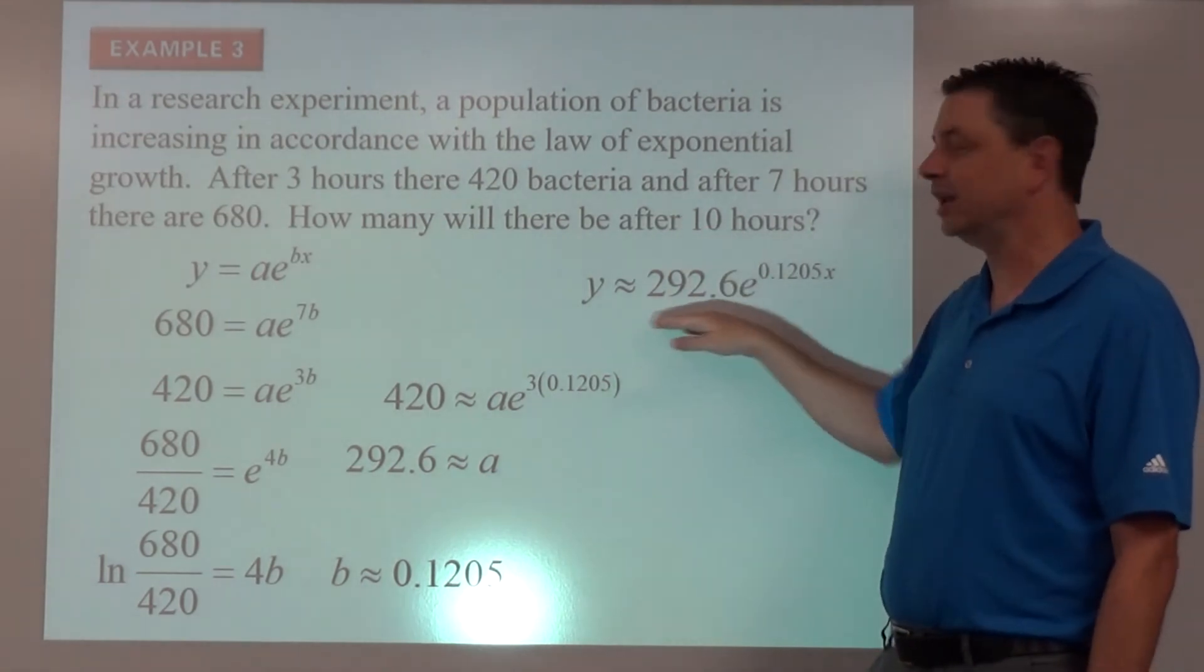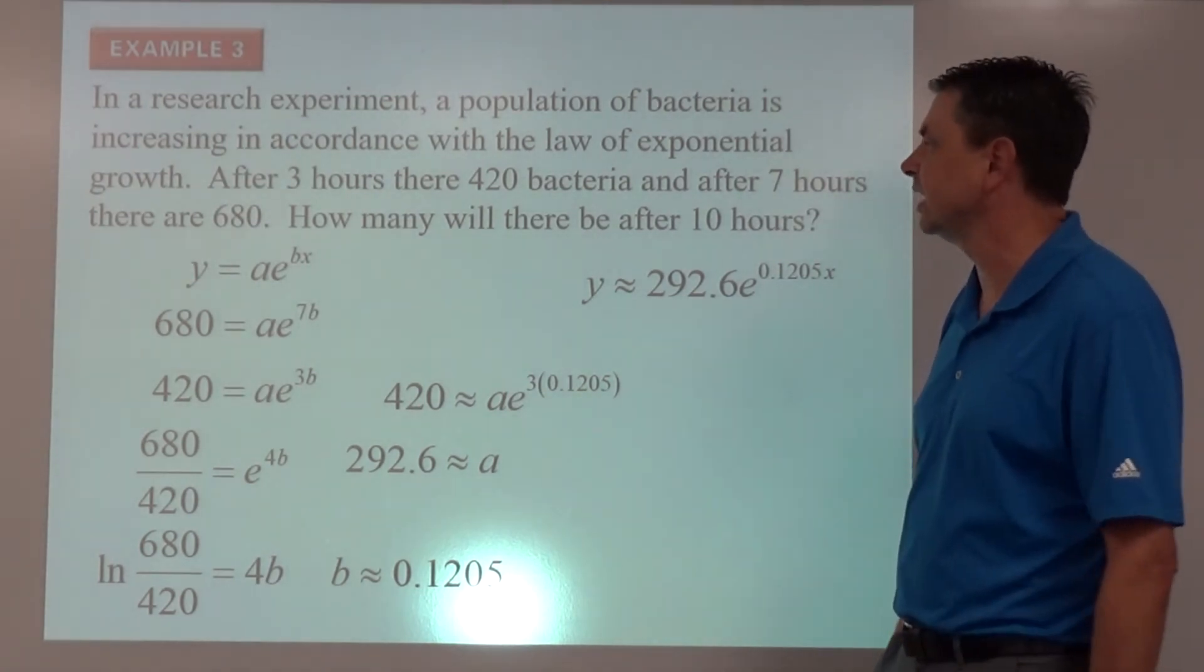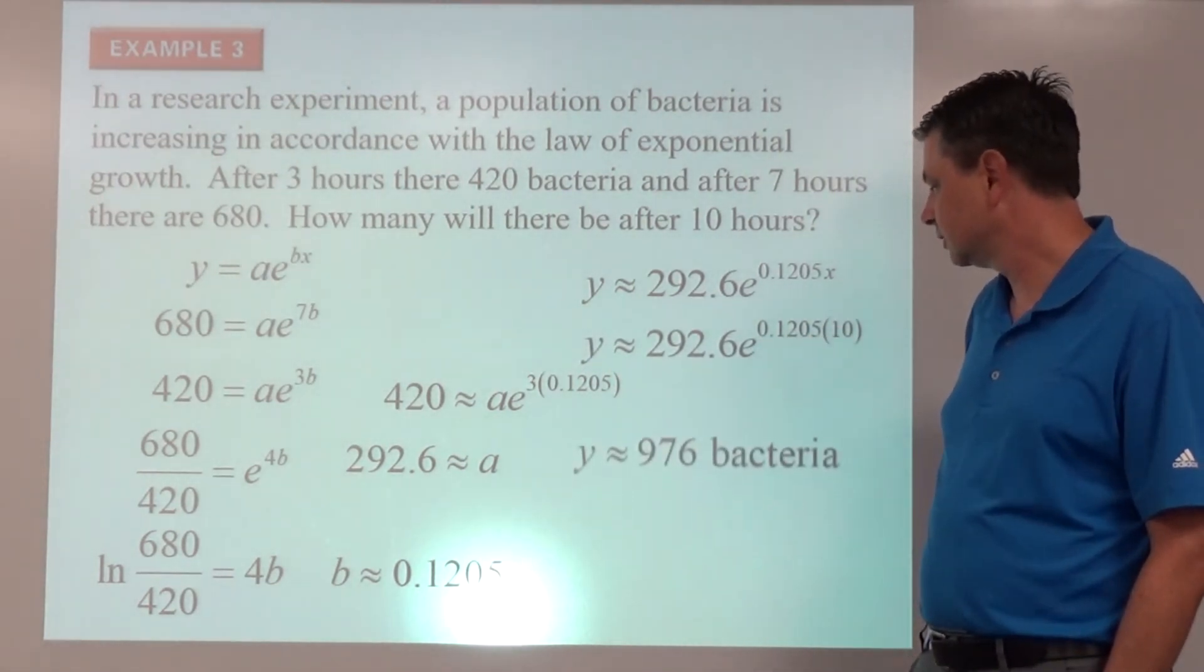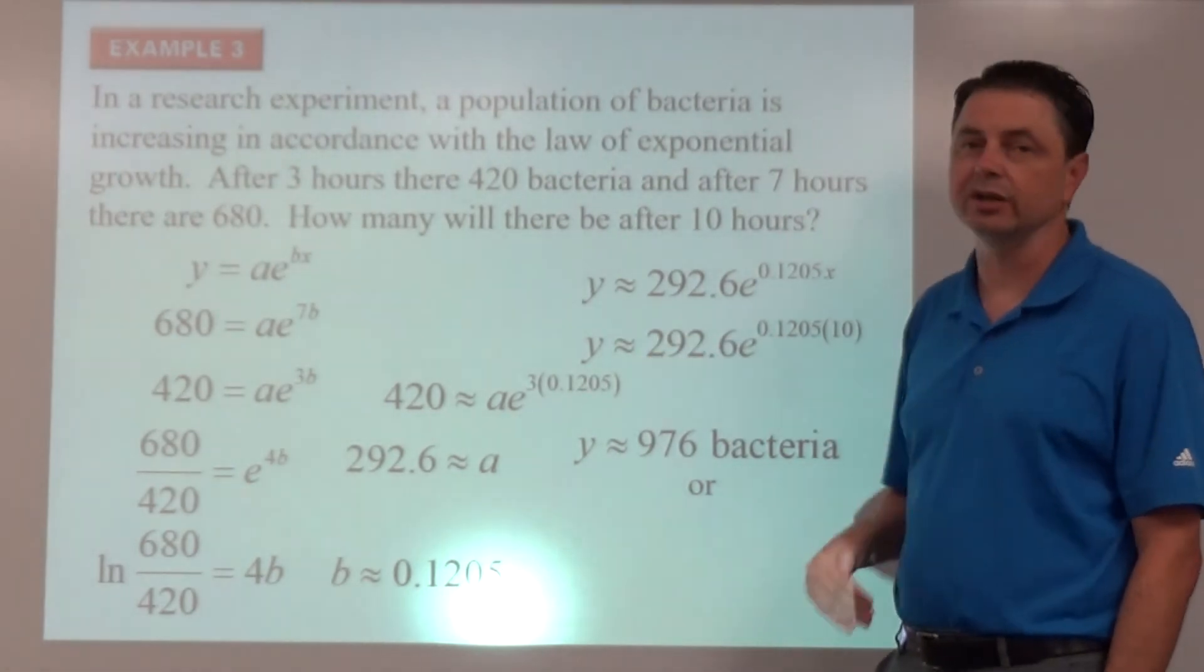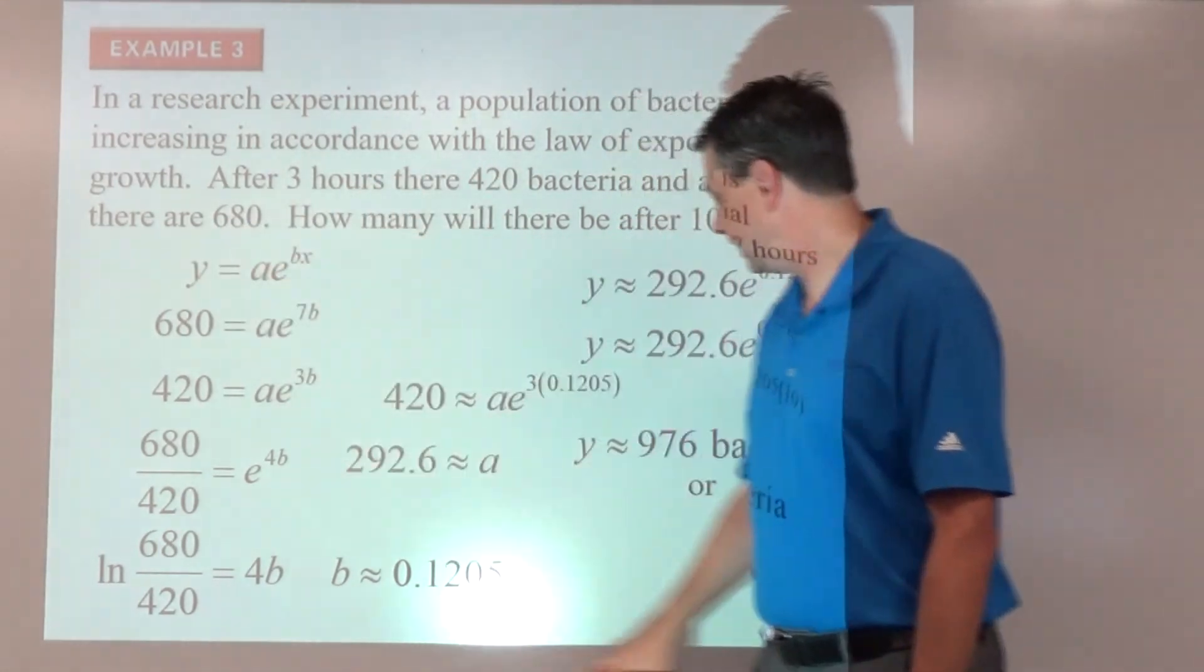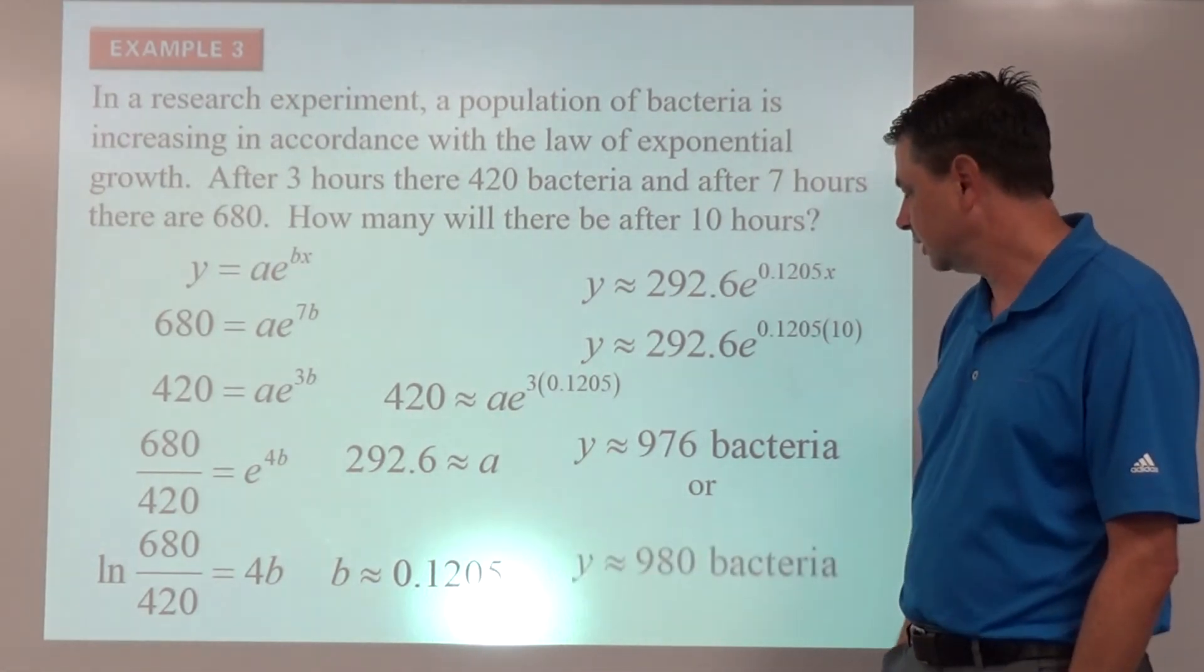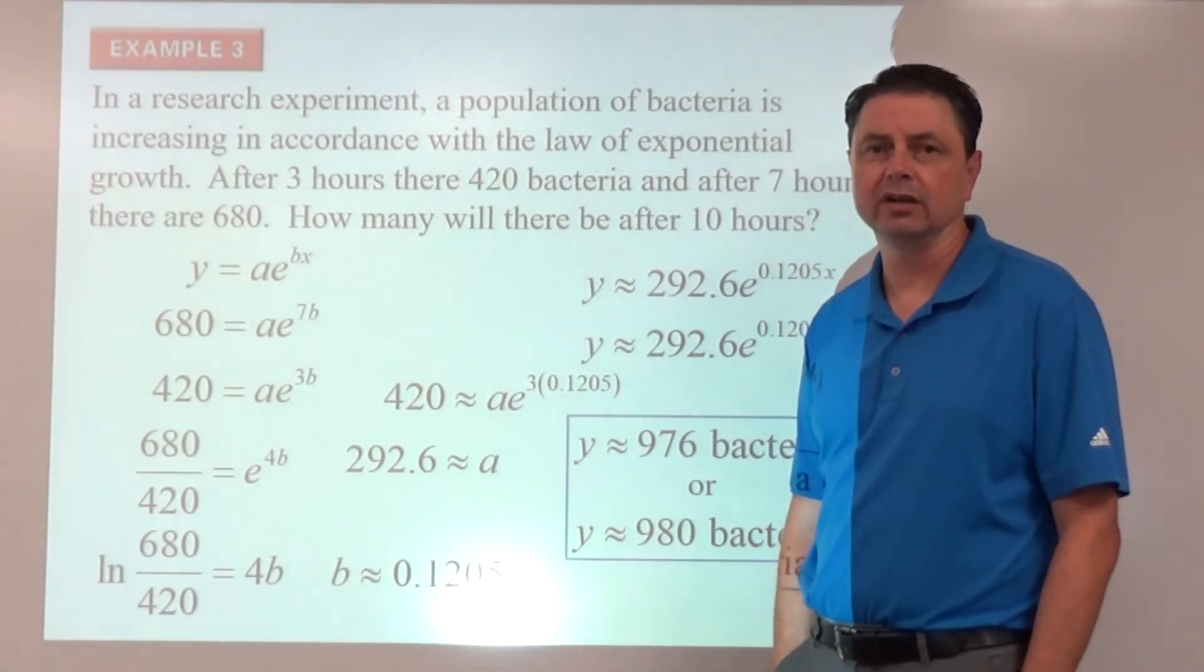And then to find out for 10, go ahead and pause the video here and substitute in a 10 and see what comes out for bacteria. Substituting in a 10 and evaluating, we would get about 976 bacteria. Again, if we're counting bacteria, we can't have a decimal of bacteria. But looking at the problem and the way it was presented, it's probably more appropriate since this is to the nearest 10 and this is to the nearest 10, apparently. We may want to do the same thing here and say it's 980 bacteria. Thinking of they're even under a microscope, they're pretty challenging to count.